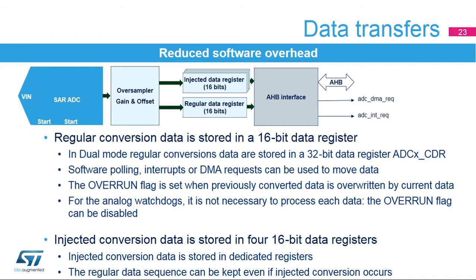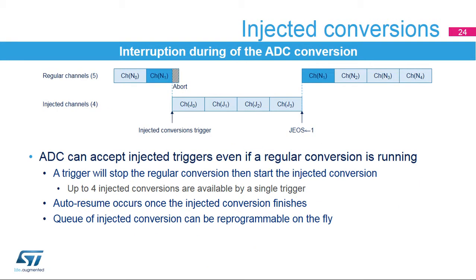The ADC conversion result is stored in a 16-bit data register. In dual mode, two samples are combined into a 32-bit register called ADC XCDR, minimizing the number of transactions on AHB. The system can use CPU polling, interrupts, or the DMA controller to access conversion data. An overrun flag can be generated if data is not read before the next conversion data is ready; in case of overrun, either the new sample is dropped or the previous sample is overwritten. For injected channel conversions, an injected conversion interrupts the regular conversion and inserts up to four channel conversions.